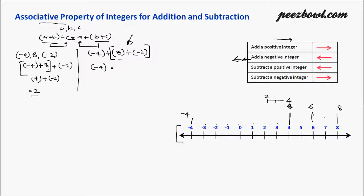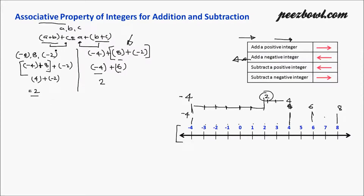So finally we have minus four plus six. We find minus four on the number line, and since we are adding a positive integer, we move six units to the right — one, two, three, four, five, six — and we reach at two. So minus four plus six equals two. We can see that the left hand side and right hand side are both equal to two, confirming that (a + b) + c = a + (b + c). Associative property is true for addition.